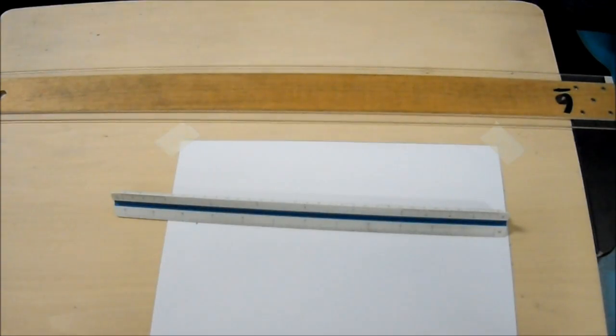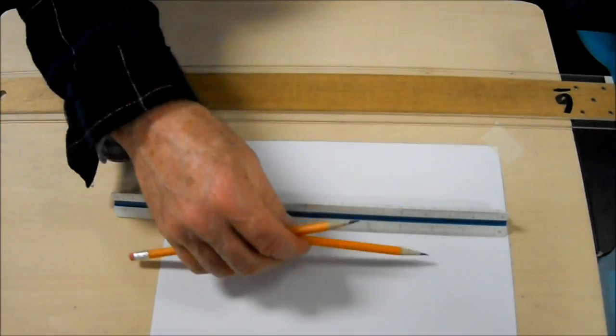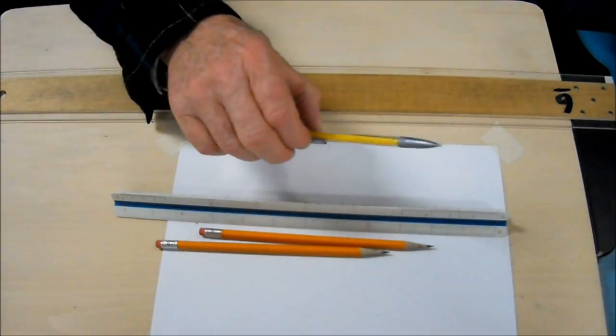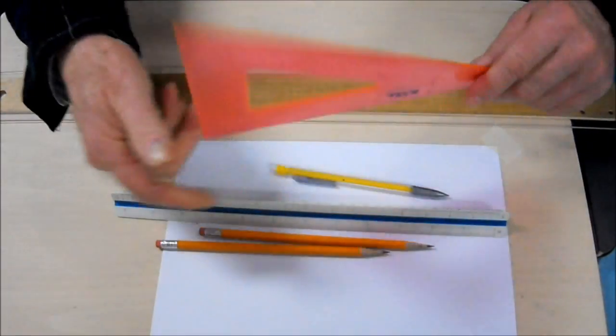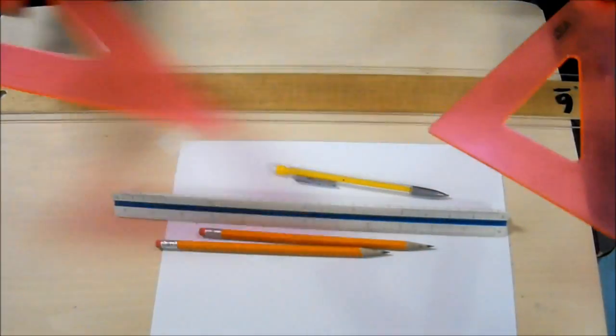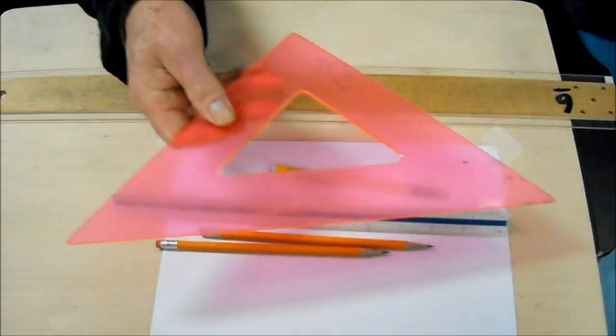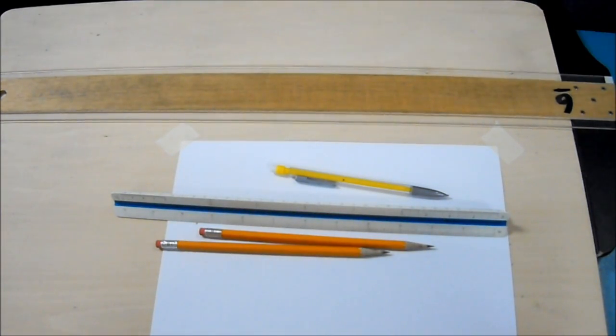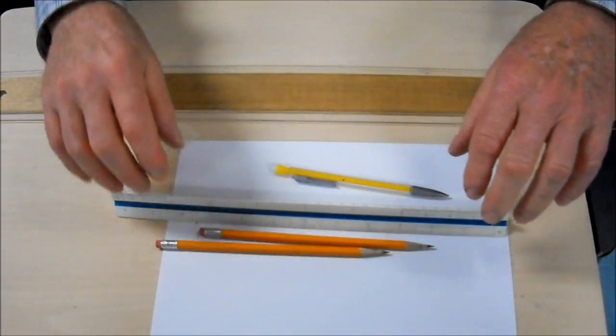We've got some basic tools we're going to use. I'm going to use an architect's scale, some regular number two pencils, a mechanical pencil, a 30-60-90 triangle, and a 45-degree triangle. We're not going to be using the 45 today. We will be using the other one in a little bit. Get all of our stuff cleared out of the way.